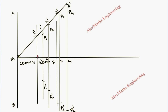Now we are going to join all these points by a smooth curve. Starting from the vertex, we draw a smooth curve passing through P1, then P2, then P3, then P4, and extend the curve in the same direction.